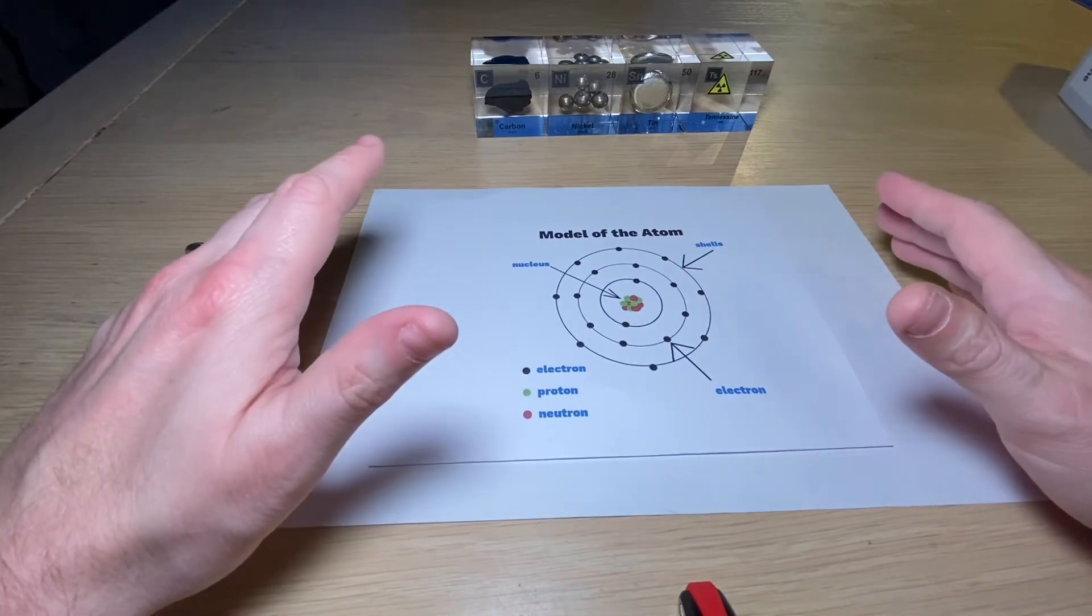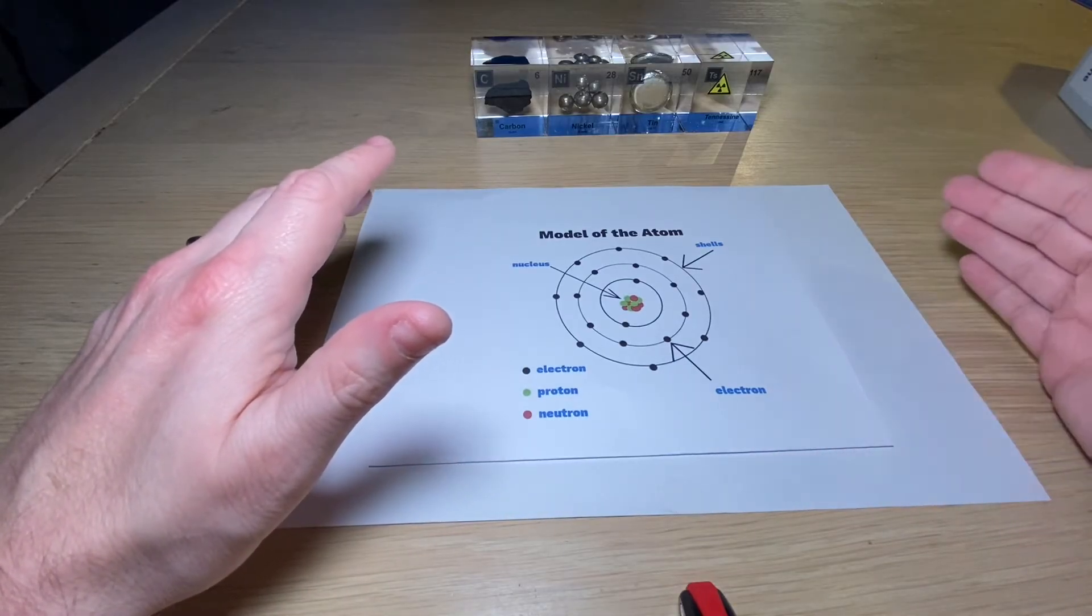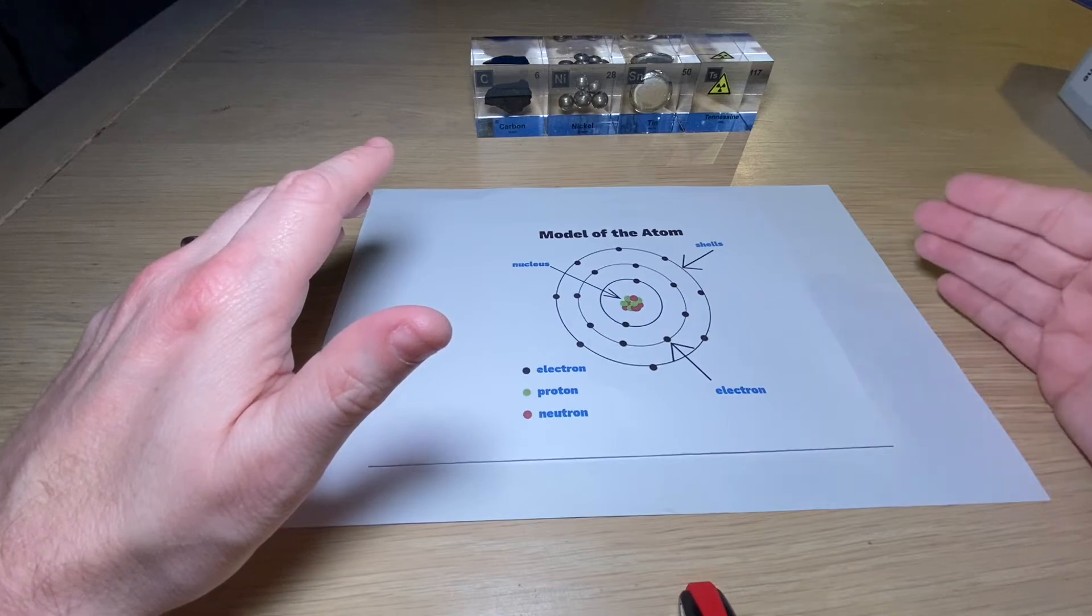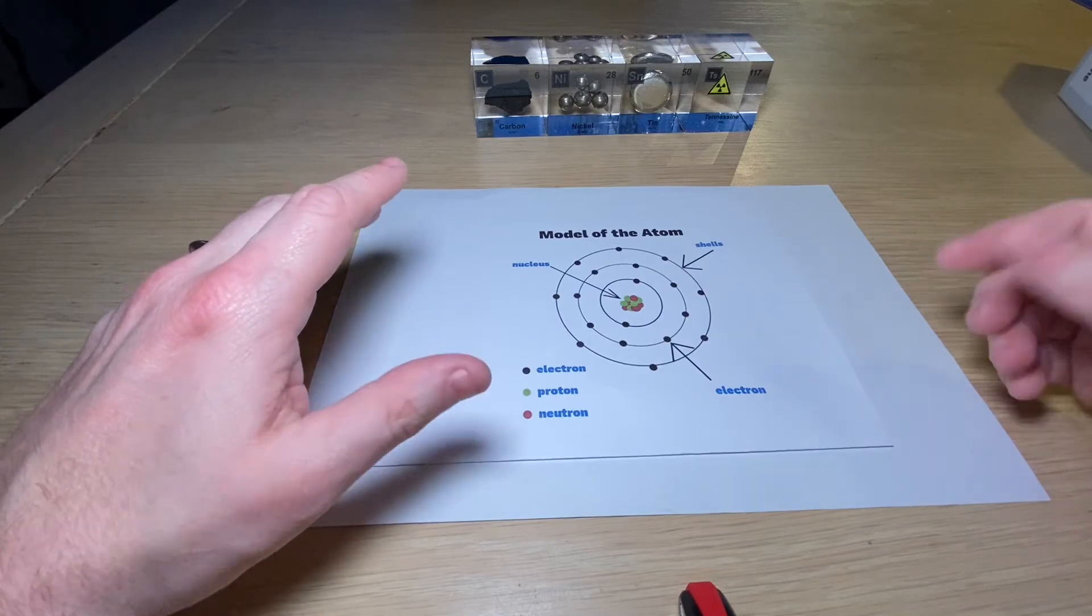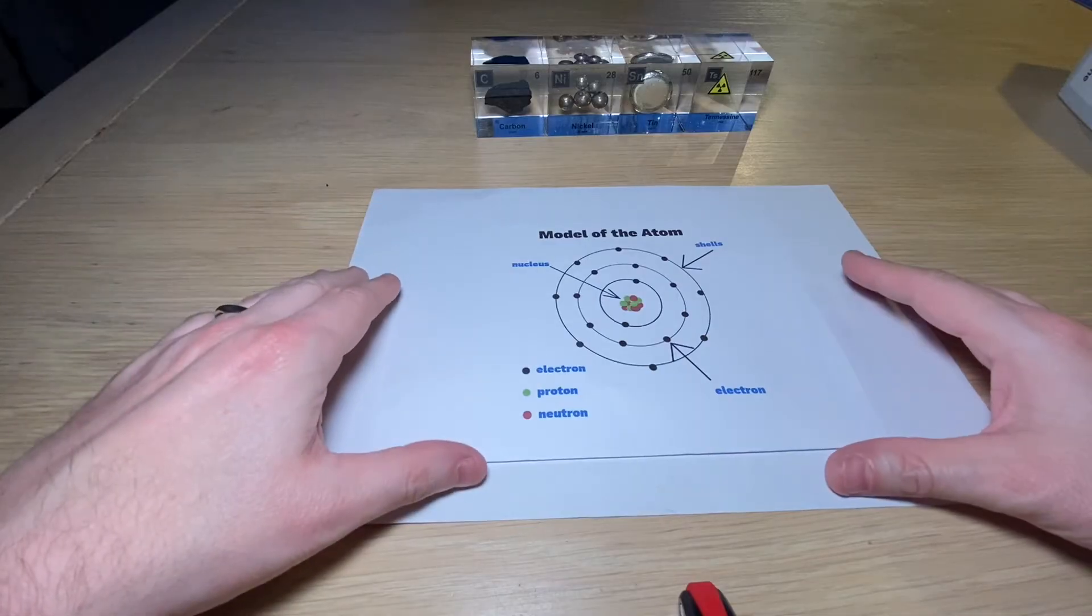And the other elements from group seven are, for instance, fluorine, chlorine and bromine, and iodine. They are also from that group.